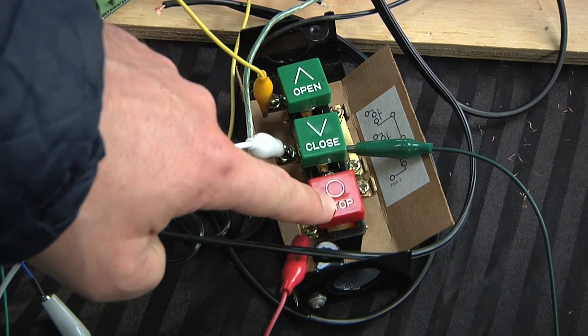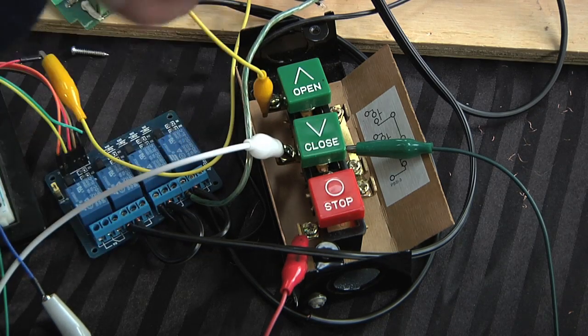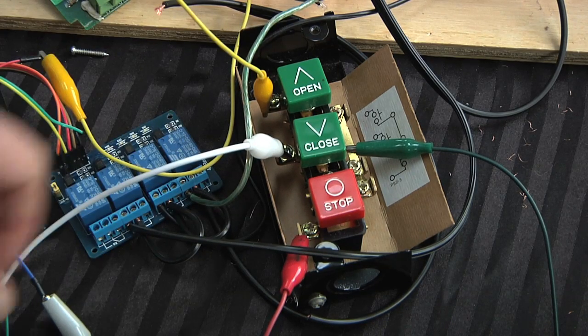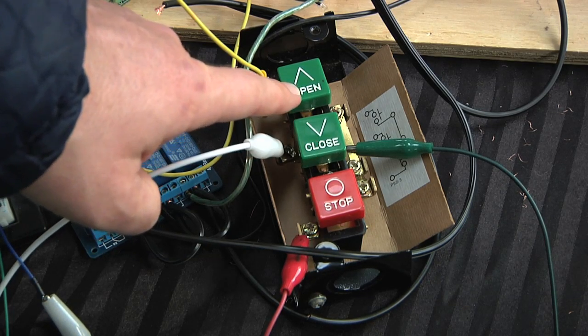Now these are just momentary on buttons though. So if you press the close button and that was hooked up to the valve that closed the door, you'd have to press and hold that to close the door. Same with the open.